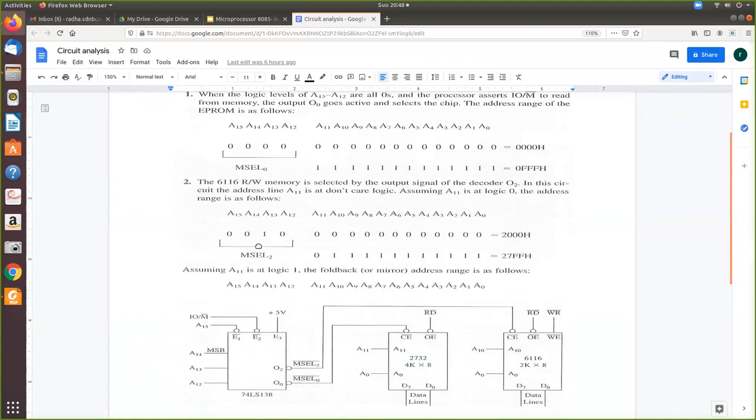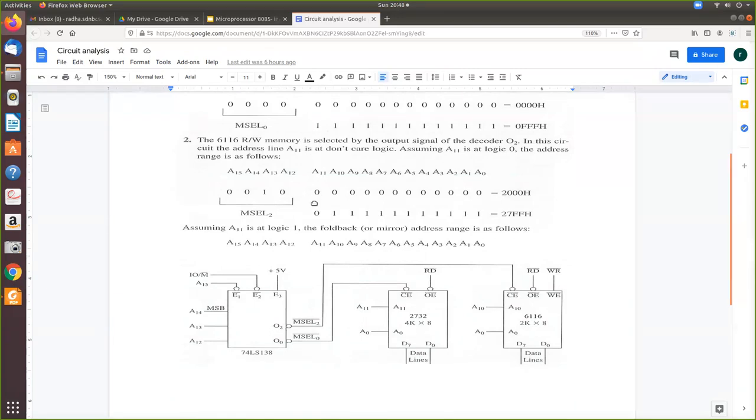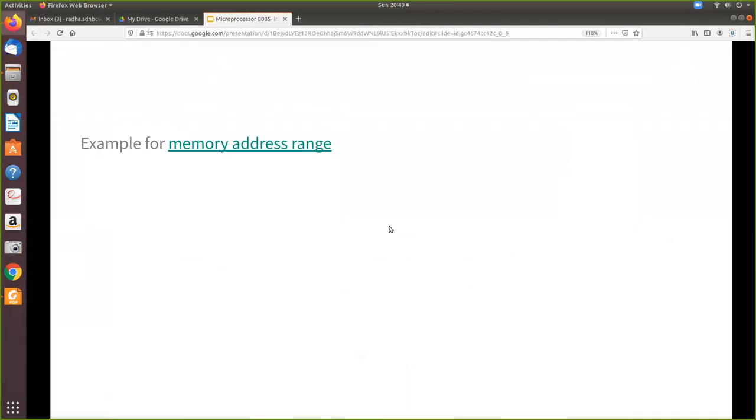Here we just assume A11 as 0 and it is left unused. And this is called partial decoding. Here for the EPROM it is absolute decoding because all the address lines are used for decoding. Whereas for this read-write memory, we have left A11 and we assume that it will have some value. So you can substitute 1 as well as 0. This is called partial decoding - all other lines are used, but this line is left to imagination. When you substitute 1 also, the address will change. So that is called partial decoding.